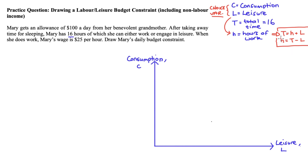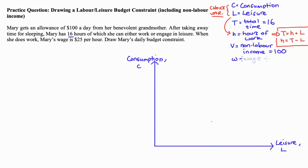Now let's call the amount of non-labor income that Mary has V, and for Mary that's equal to 100 — that's what grandmother gives her. And let's call the wage rate W, which is 25 for Mary from the question.